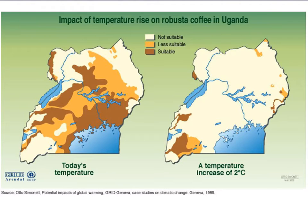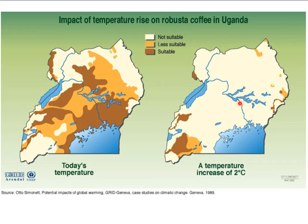Environmental problems such as climate change have the greatest impact on the poor in developing countries. For example, this is a map of Uganda, and Uganda's main export is coffee. We can see the areas of Uganda currently suitable for the cultivation of coffee as a cash crop. However, an increased temperature of just 2 degrees would be potentially devastating to this really important cash crop.